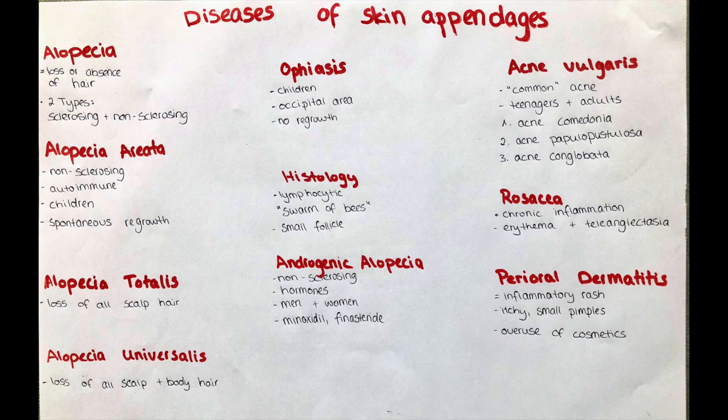There can also be a time of spontaneous regrowth of hair. The new hair is sometimes thinner or more vulnerable to breakage, and might be unpigmented, so it can appear white or grey. The areas of hair loss can be solitary or multiple.